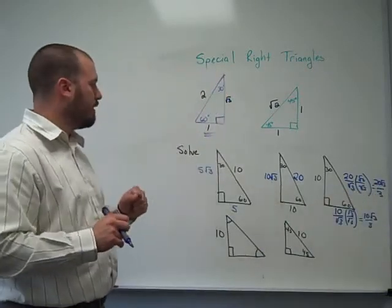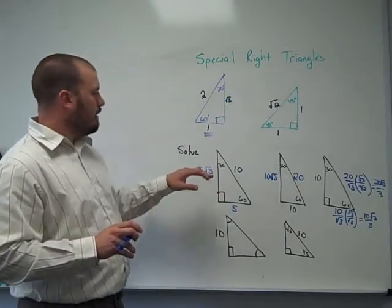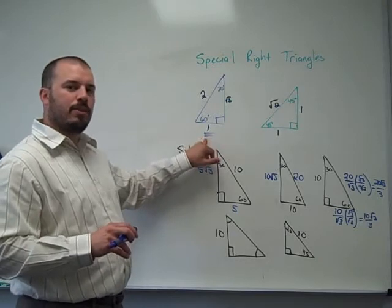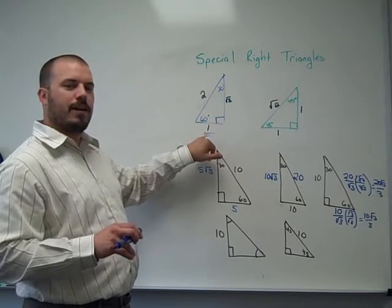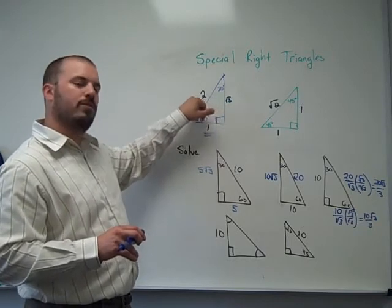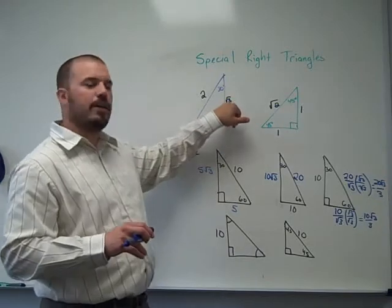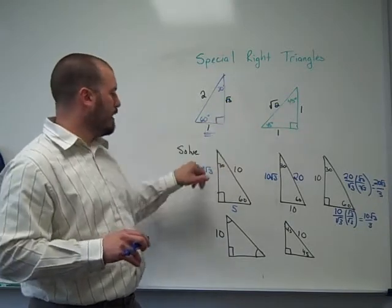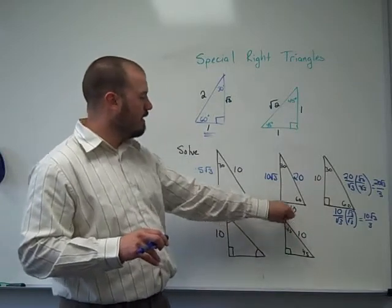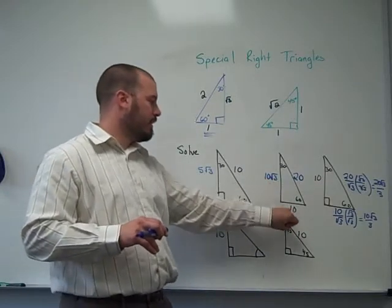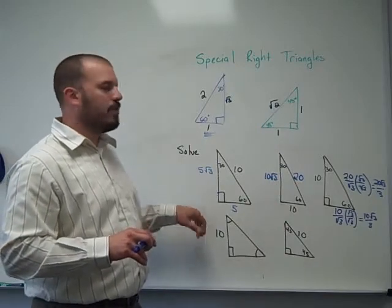Alright, so that was 30-60-90 triangles. The basic idea is to identify the side opposite of 30° and use the pattern: the side opposite of 30° times 2 gives the hypotenuse, and the side opposite of 30° times √3 gives the side opposite of 60°. If we check that on any of these examples, the pattern holds.